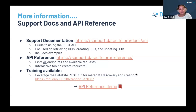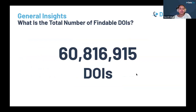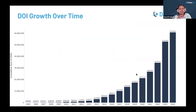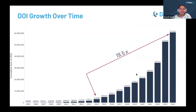Let's have a look at some general insights. To date, Datasite has registered over 60 million findable DOIs, each of which comes with a wealth of metadata. This figure illustrates the growth of DOI registrations from 2005 onwards, showing a remarkable upward trend over the past 20 years. One particularly interesting observation is the significant growth in DOIs registered in just the last decade alone.